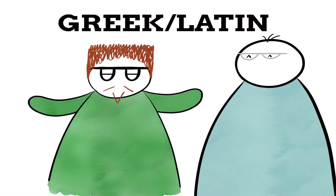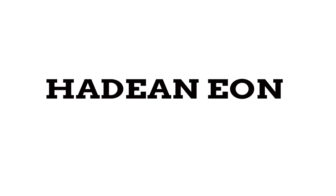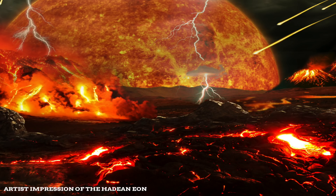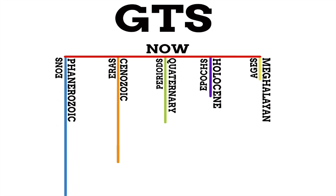Take the name of the earliest Eon we know, the Hadean Eon, coming from the Greek words for unseen and hellish, because the Earth then would have looked rather hellish. The name of our Eon, the Phanerozoic Eon, comes from Greek meaning 'visible life,' as the life created in this Eon can still be seen around us today.